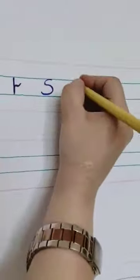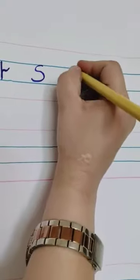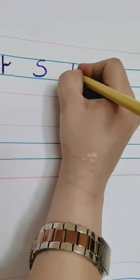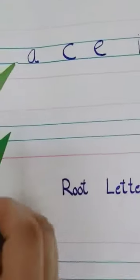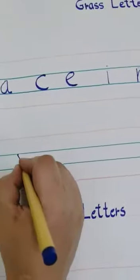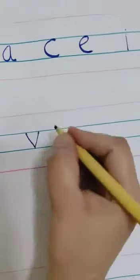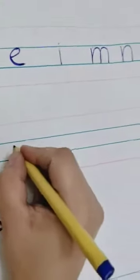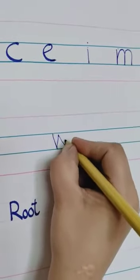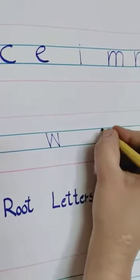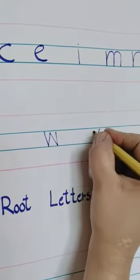T is in the sky letter set. U — yes, exactly. U is also a grass letter because it also comes into the center two lines. V is also a grass letter. W — yes, it's also a grass letter. X — good.